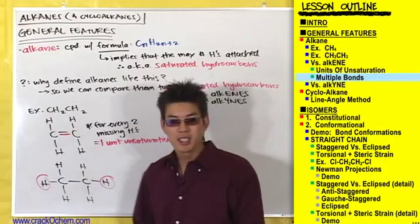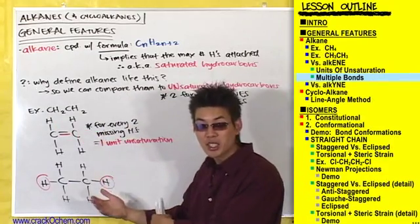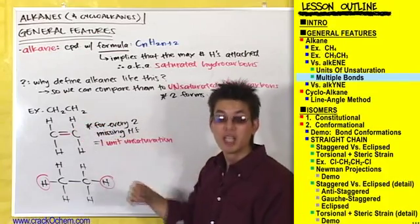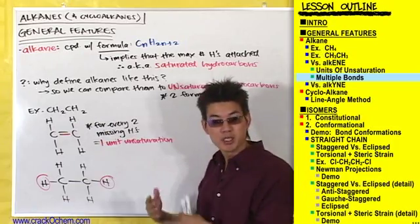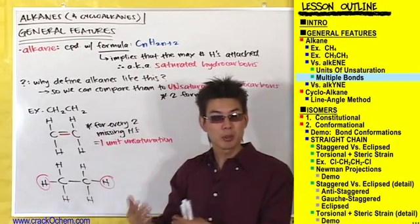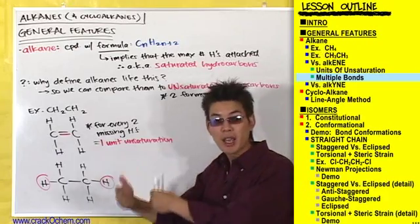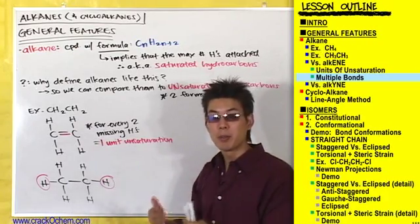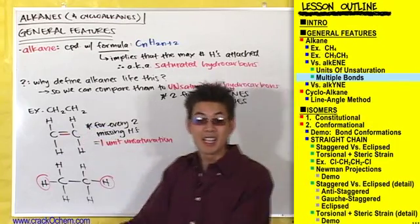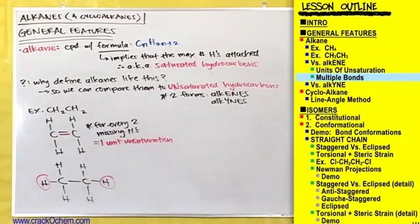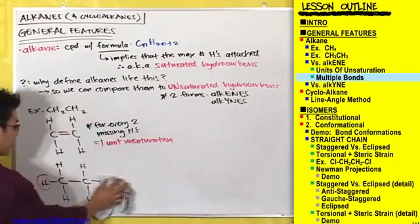Just to prove that this compound is unsaturated and is missing hydrogens, let's use the alkane general formula to double-check. The formula will tell us the max number of hydrogens this two-carbon compound should have to be saturated. If we compare that to the number of hydrogens we actually have on this compound, it should be less.